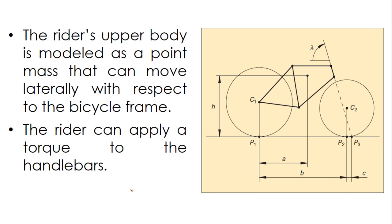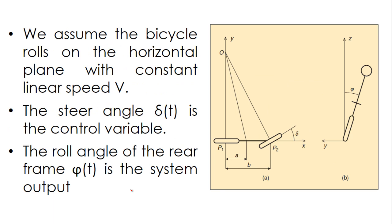We assume that the bicycle rolls on the horizontal plane with constant linear speed. In this model, we are not interested in the linear acceleration of the bicycle — we will assume that the bicycle is already going with constant speed.